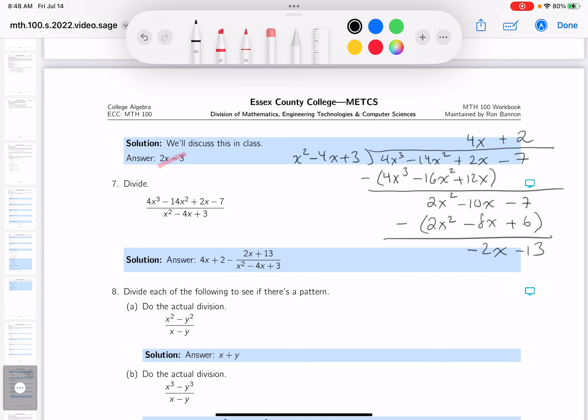I'm going to write the answer down now, and the quotient is 4x plus 2 plus the remainder. What's the remainder? Minus 2x minus 13. And we divide that by x squared minus 4x plus 3. This is a fine answer. I want to point out, if you look in most textbooks, they would not write this down.